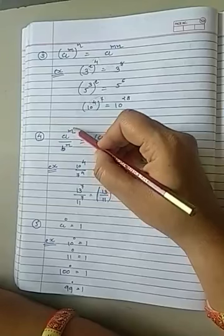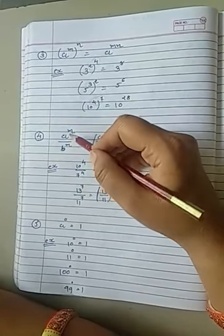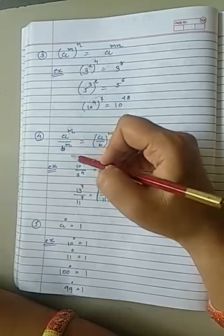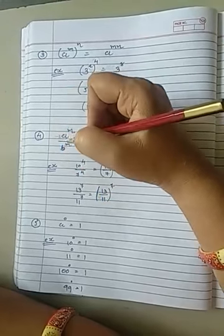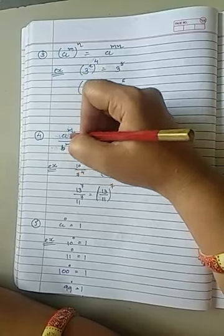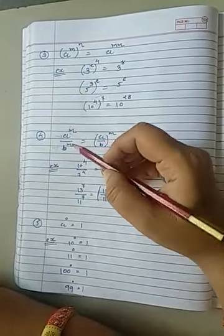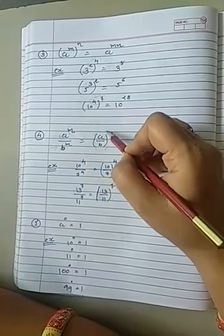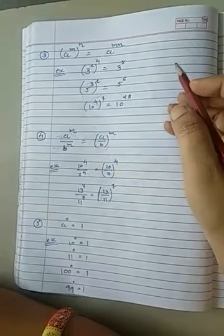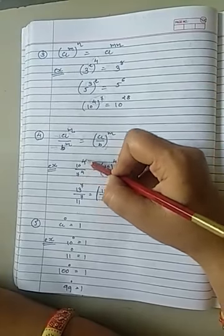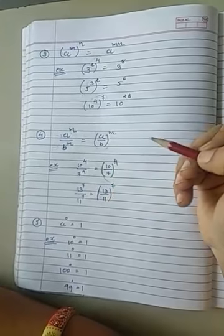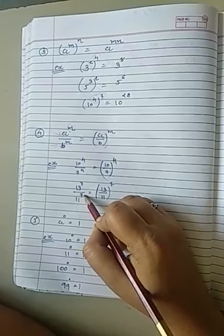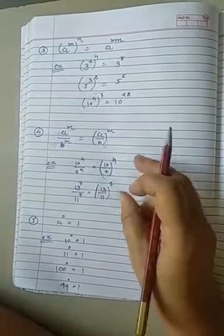Fourth rule: a raised to m upon b raised to m. If you will see carefully, both powers are equal, so give them power m together. For example, 10 also raised to 4, 7 also raised to 4. Both powers are equal, so give them 4 together: 10 by 7, all raised to 4. 13 also raised to 7, 11 also raised to 7. So 13 by 11 and all raised to 7. This is your fourth rule.